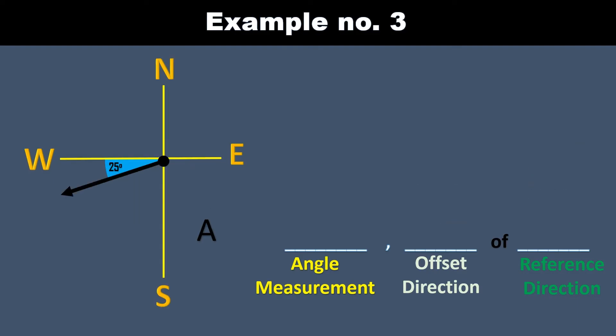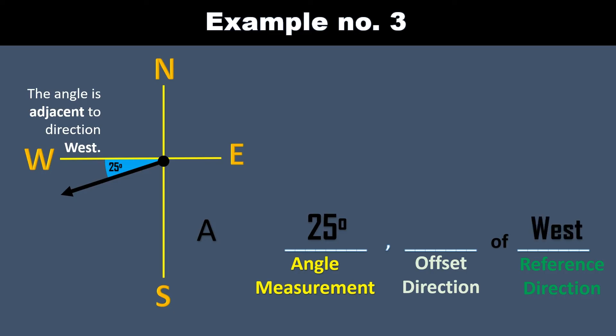Let us try another example. The given angle is 25 degrees. The 25-degree angle is adjacent to the west direction, so we place the word west on the third blank for the reference direction. The angle is turning towards south, so we place south on the second blank. So the angle is read as 25 degrees south of west.